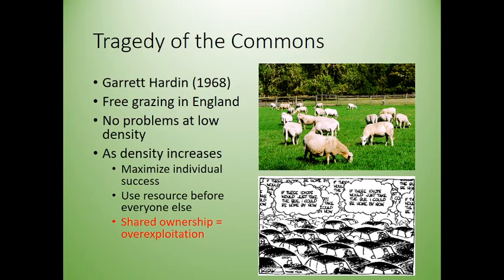This idea of the ecological footprint really applies to another idea called the tragedy of the commons. It comes from a theory in the 1960s by a guy named Garrett Hardin. He was looking at the medieval practice of free grazing land — the medieval practice in England where the king opened up a lot of his land and said anybody can graze on this land. So if only a few people use that resource — the free grazing lands for their sheep — it's no problem. There's plenty of grass for everybody.